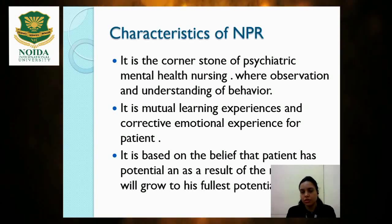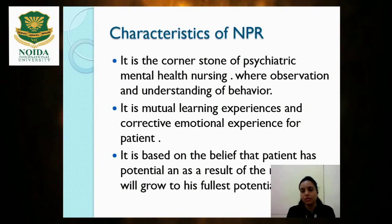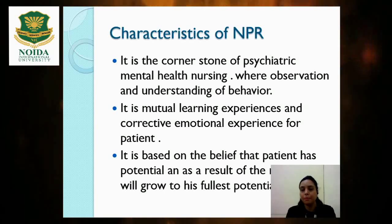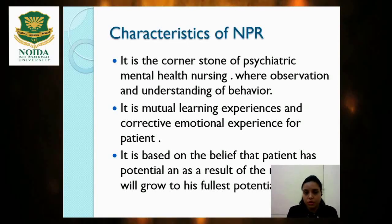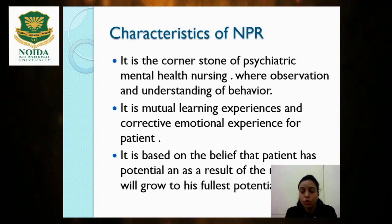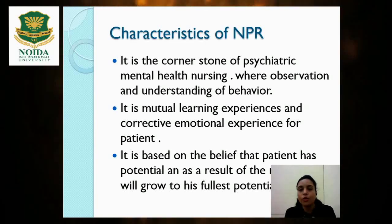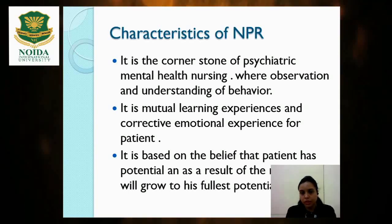In the nurse-patient relationship, one characteristic is that observation and understanding of behavior is a primary concern. The nurse should observe the behavior of the patient, and both must understand the behavior of each person. The second characteristic is the mutual learning experience.